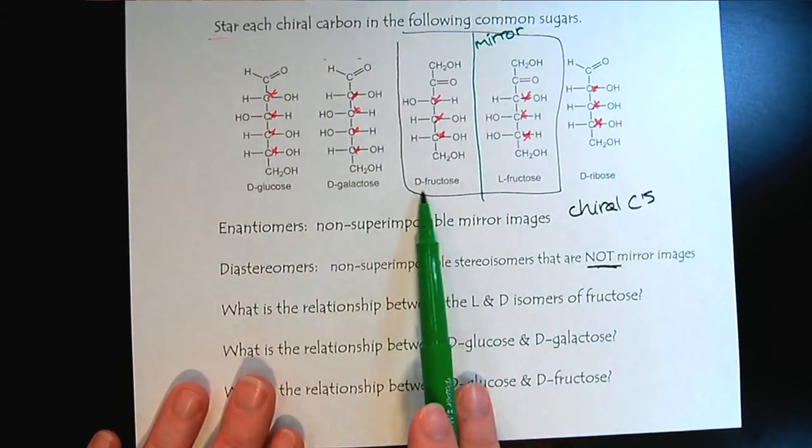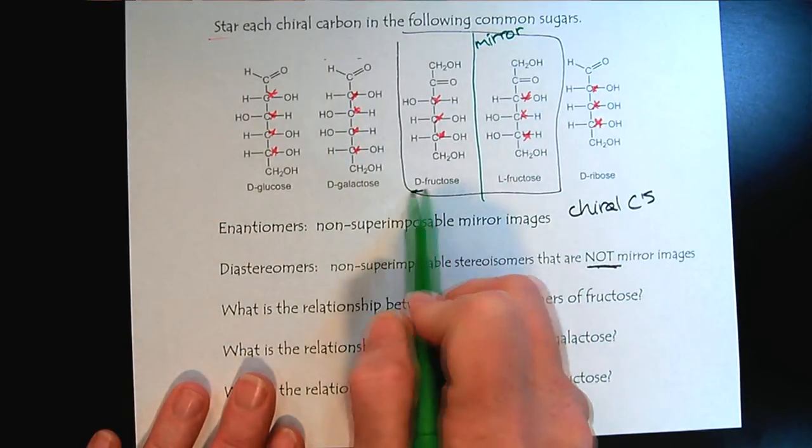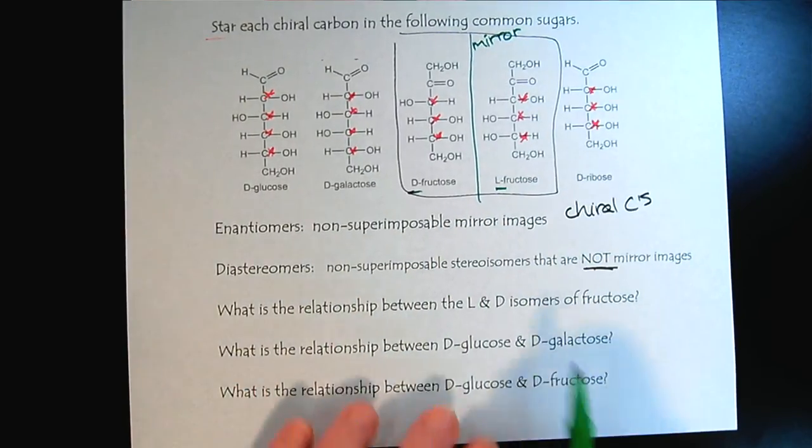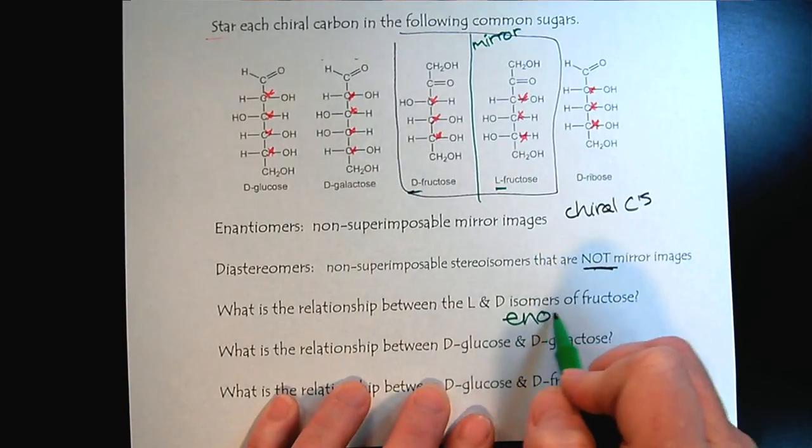So the relationship between D-fructose and L-fructose, then, is that they are non-superimposable mirror images. They are a pair of enantiomers.